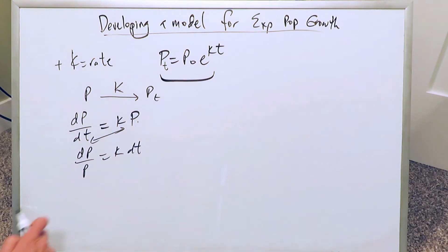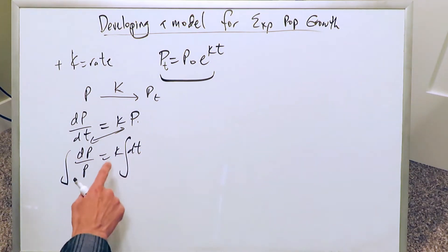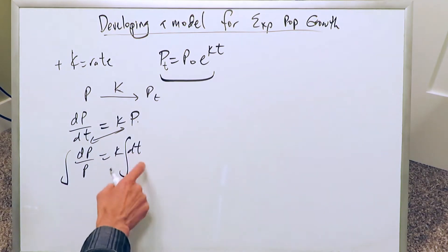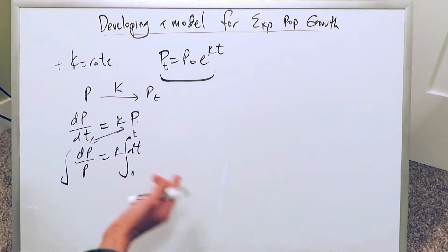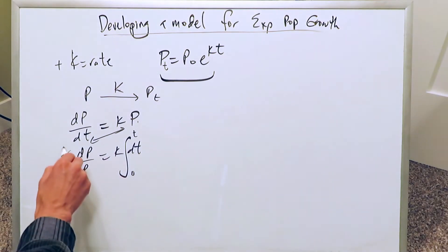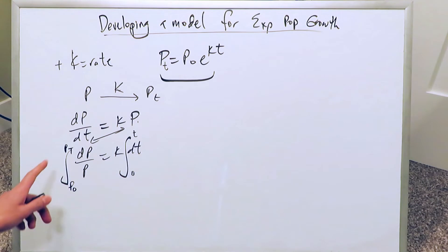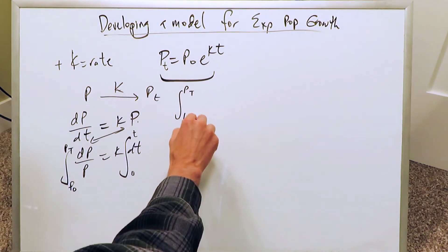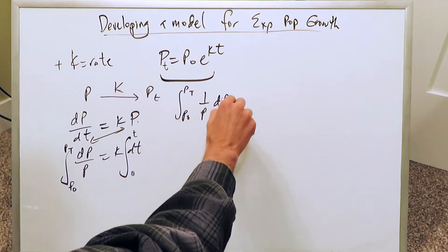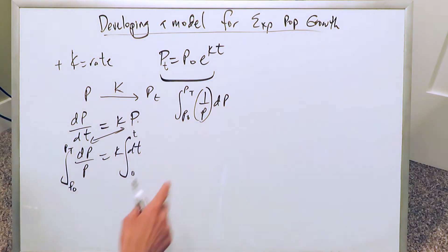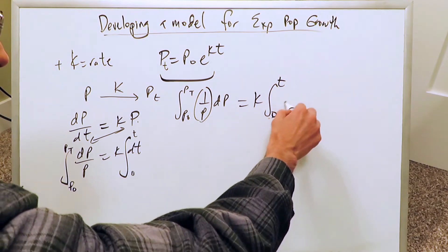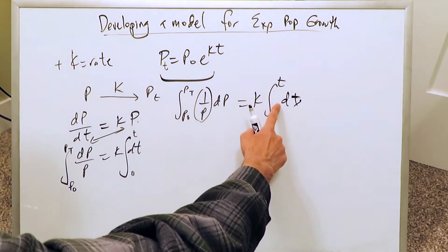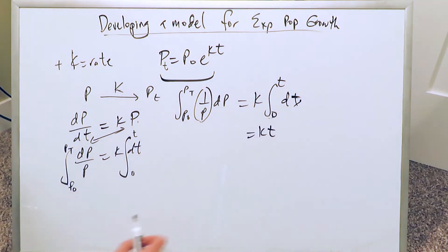If you add an integral sign to this rate of change equation, k can act as a constant. With respect to time, you're integrating from initial time zero to time t. On the population side, you integrate from the initial population P₀ to the final population Pt. When you integrate the right side, you get a hidden antiderivative in the form of just t, and the integral and the dt component disappear.